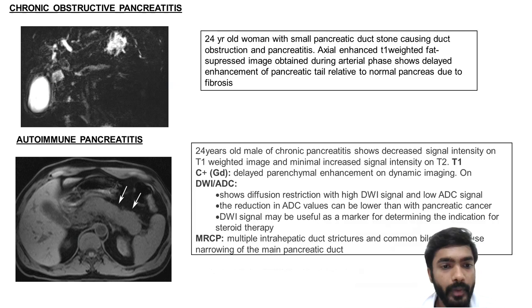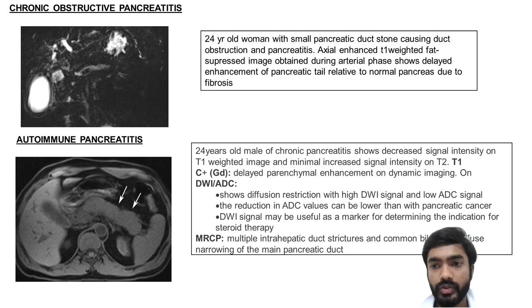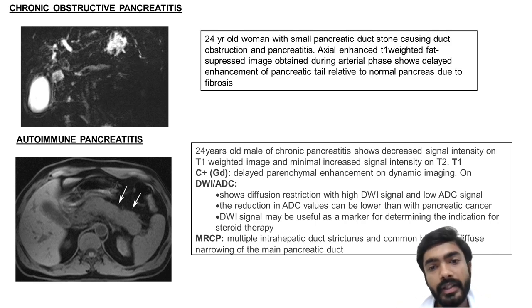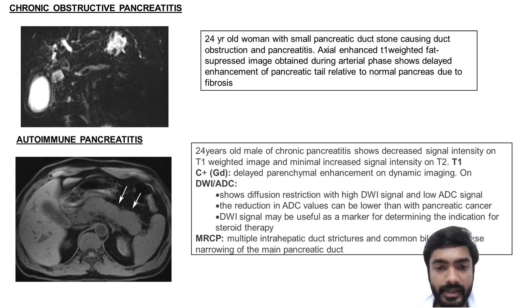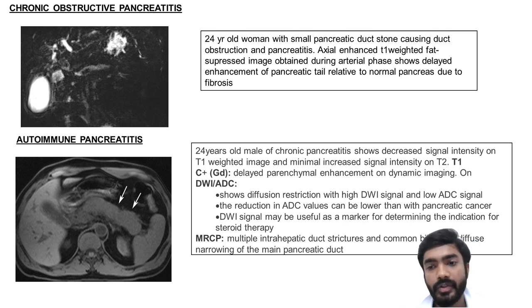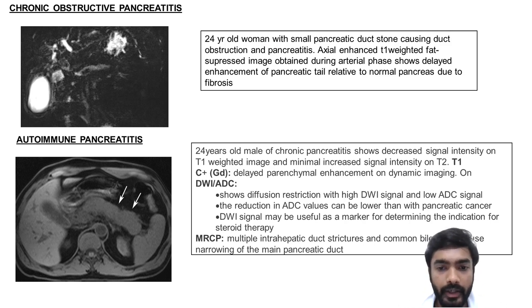This is a case of autoimmune pancreatitis showing a sausage-shaped pancreas in a 24-year-old male with decreased signal intensity on T1-weighted images. On T1 gadolinium images, delayed parenchymal enhancement is seen on dynamic scanning. On DWI and ADC, restriction is seen with high DWI signal and low ADC signal. On MRCP, multiple intrahepatic duct strictures and common biliary duct involvement with diffuse narrowing of the main pancreatic duct can be seen.